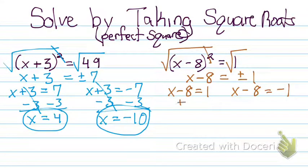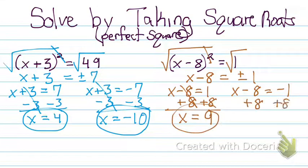So then I'm going to add 8 to both sides. And then I'll have x equals 9 because 1 plus 8 is 9. I'm still going to add 8 to both sides. And negative 1 plus 8 equals 7. And these are my two solutions. That's it!